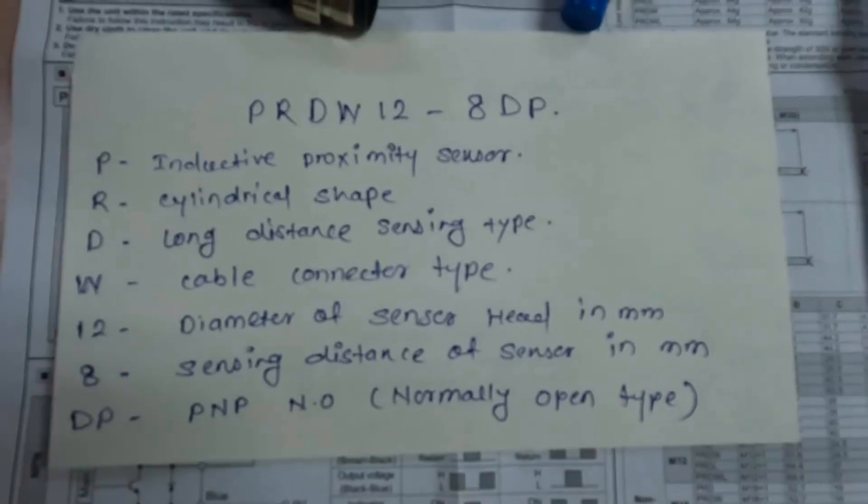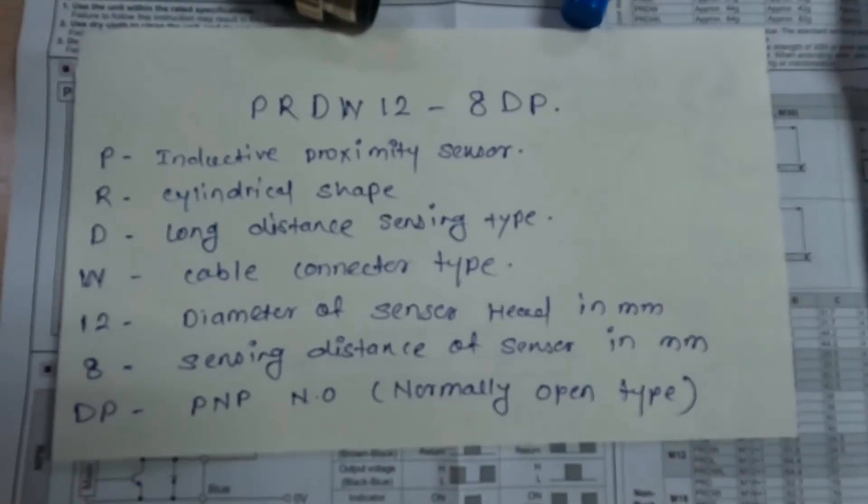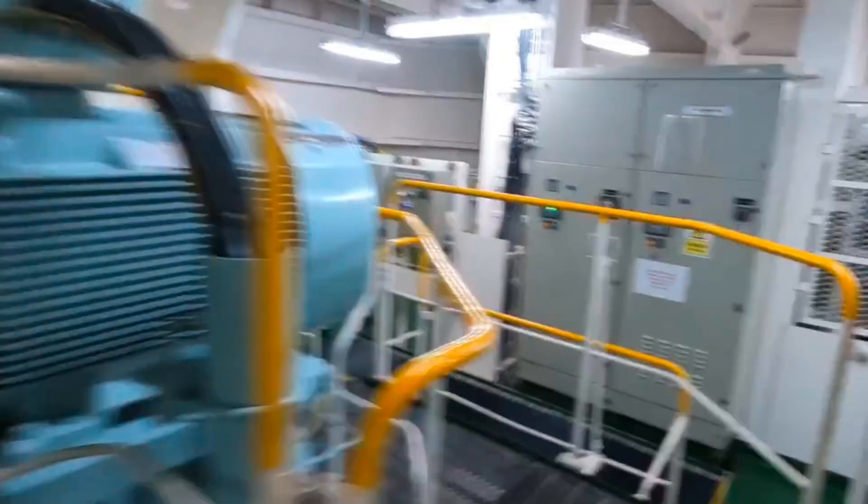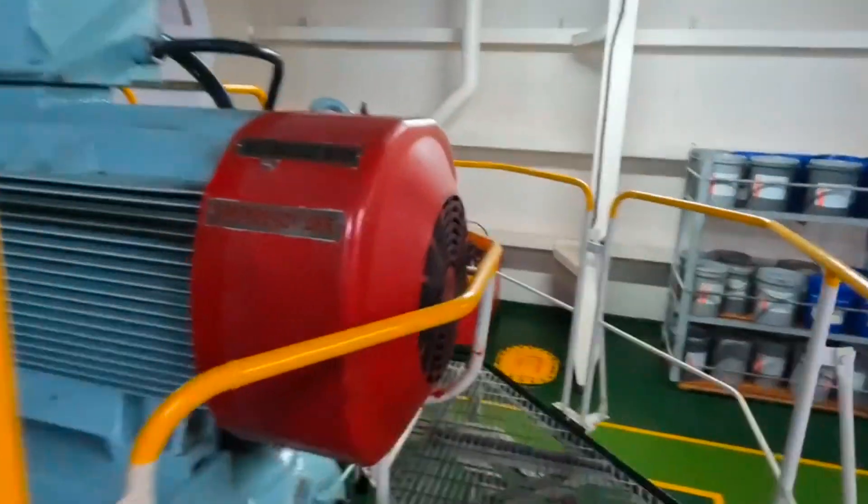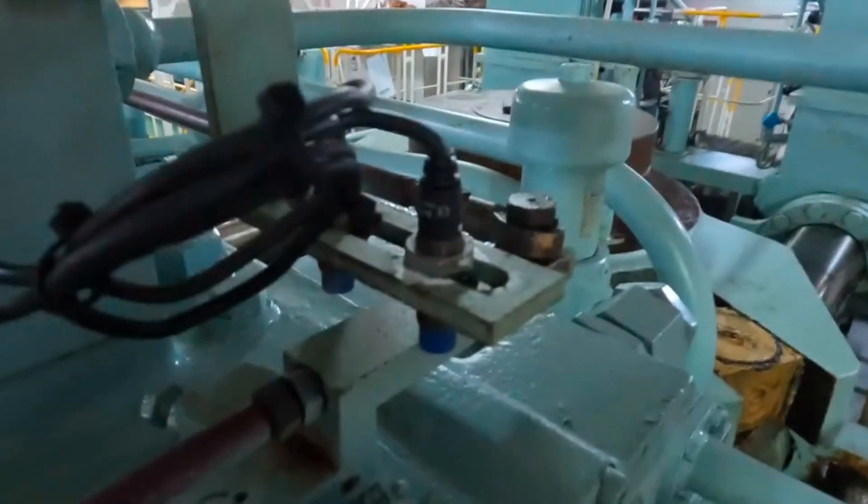This sensor type is PRDW128DP. While changing the sensor, please make sure the distance between the sensing head and control lever is around 8mm as per the sensor type and manual instructions.